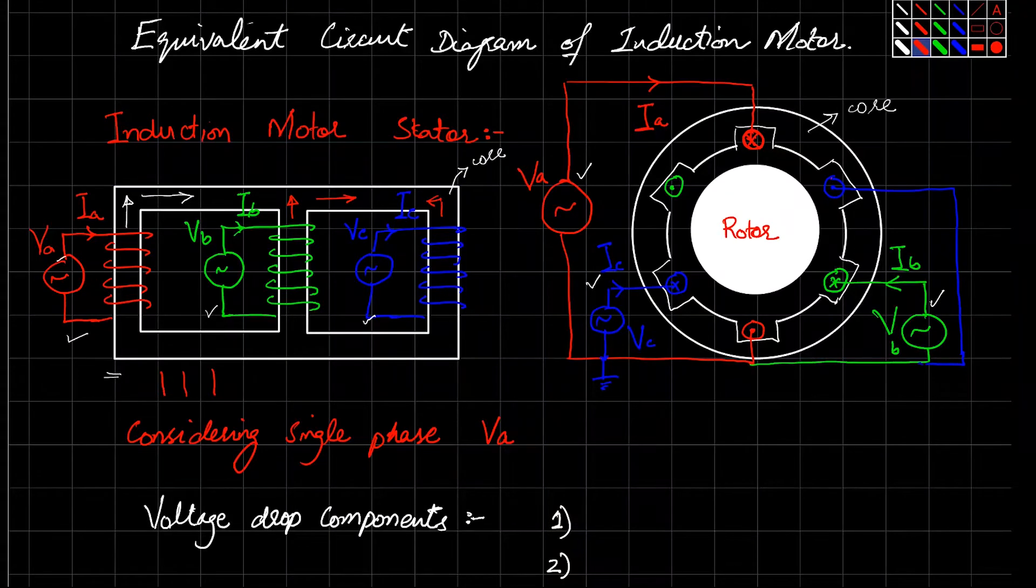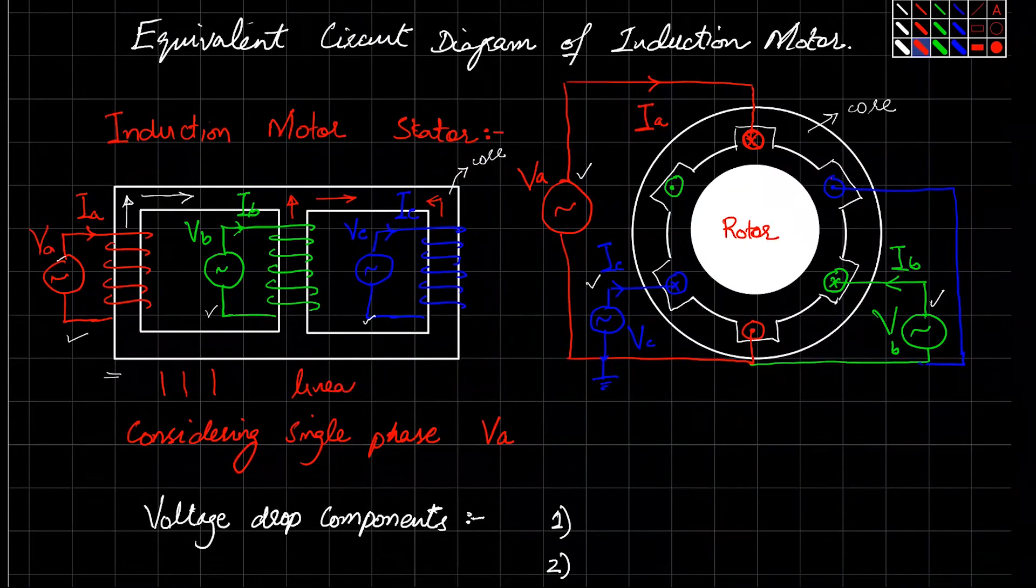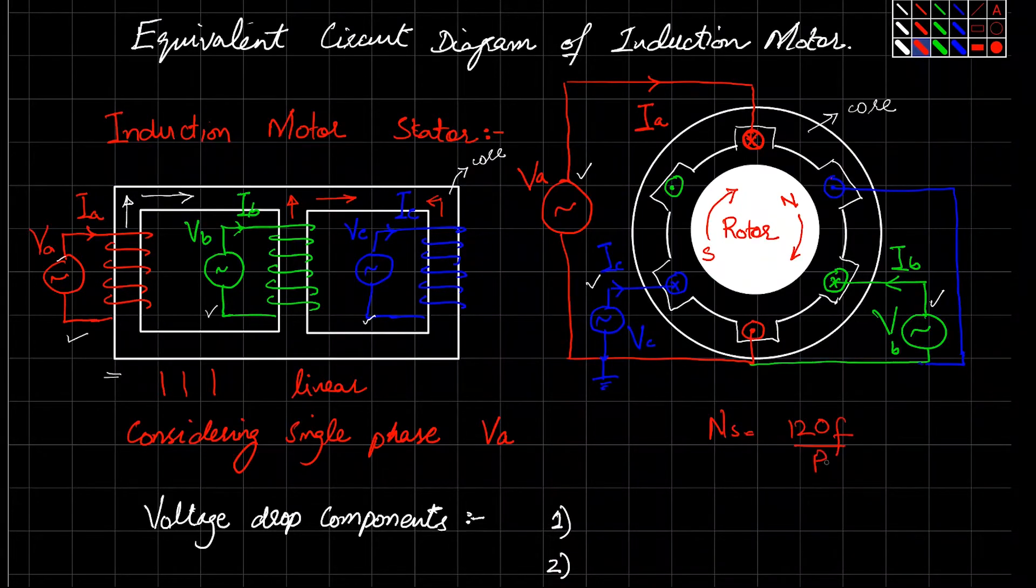The important point is that the magnetic field produced in transformers will be a linear magnetic field, whereas the magnetic field produced in three-phase induction motor stator will be a revolving magnetic field. You have north pole and south pole that will rotate in this direction, and the speed of rotation is given by the relation ns = 120f/p.